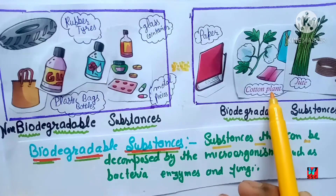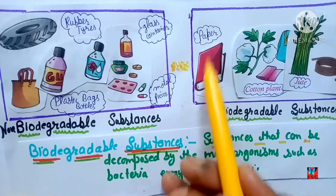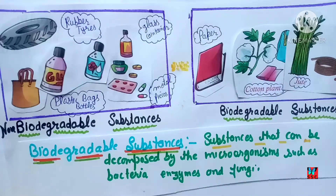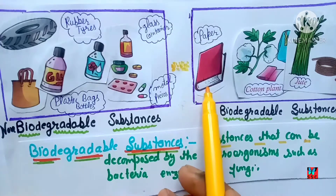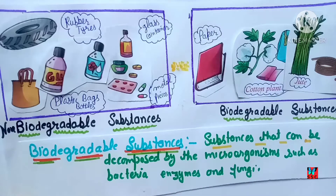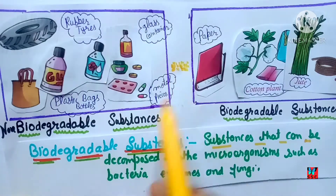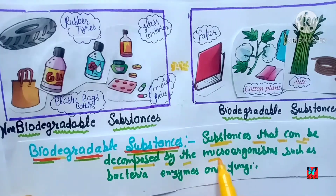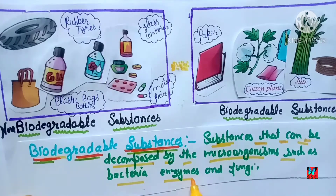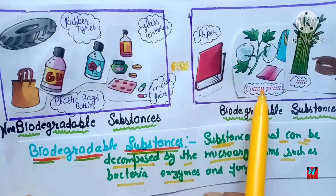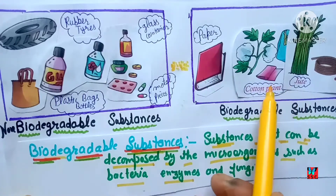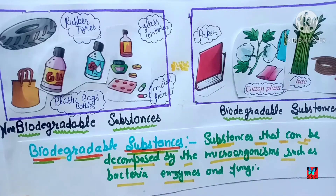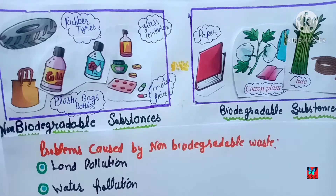Now look at this picture — cotton plant, jute, paper. Can these be decomposed by the action of bacteria? Yes. Biodegradable substances are those that can be decomposed by the action of microorganisms such as bacteria and enzymes. Examples include cotton, paper, and jute — all three will be decomposed by the action of microorganisms.